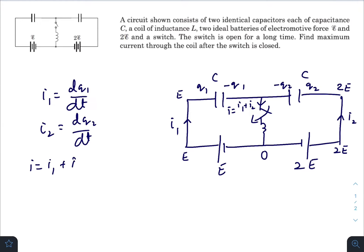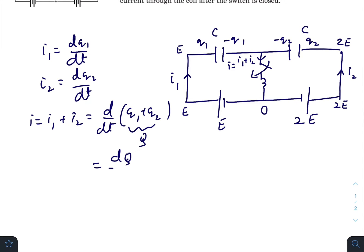So i equals i₁ plus i₂ will be rate of change of both q₁ and q₂. I'm considering this as capital Q, so i will be dQ/dt. There are two loops you can see: loop number one and loop number two.